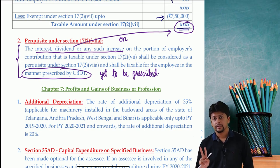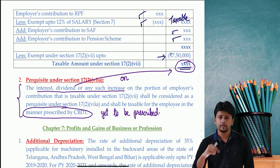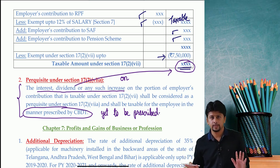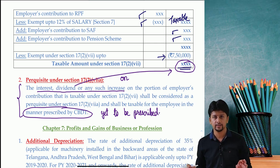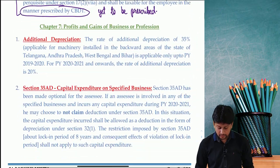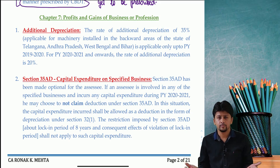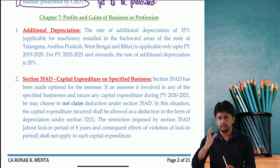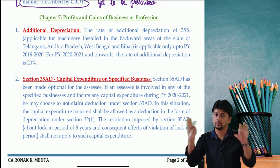So those are the two amendments in the chapter of Salaries: first, the aggregate ₹7.50L exemption on employer's contributions to RPF, superannuation, and pension scheme under the redrafted Section 17(2)(7); second, the new Clause 7A taxing interest/dividend on the taxable portion. There is no amendment in House Property — all November 2020 questions remain applicable with a year change.